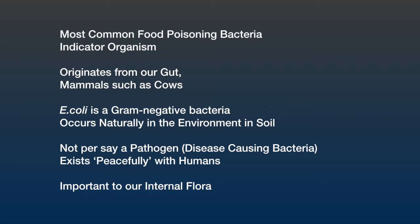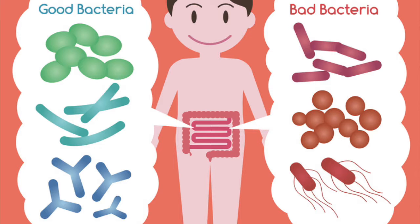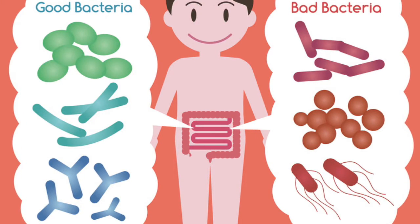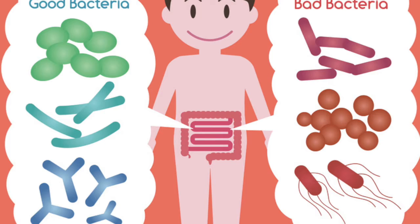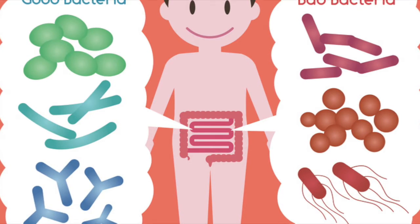Let's take a look at E. coli. E. coli is one of the most common food poisoning bacteria and is what we call an indicator organism. E. coli originates from our gut as well as other mammals such as cows. It is a gram-negative bacteria that is naturally occurring within the environment, mostly in soil or in our gut. These are not per se a pathogen — in other words, a disease-causing bacteria. E. coli does exist peacefully with humans and is an important part of our internal flora.